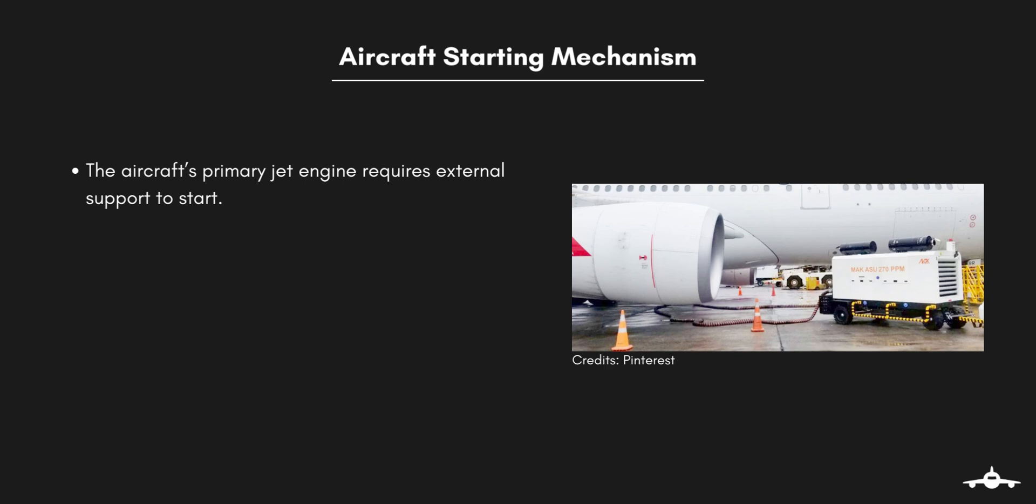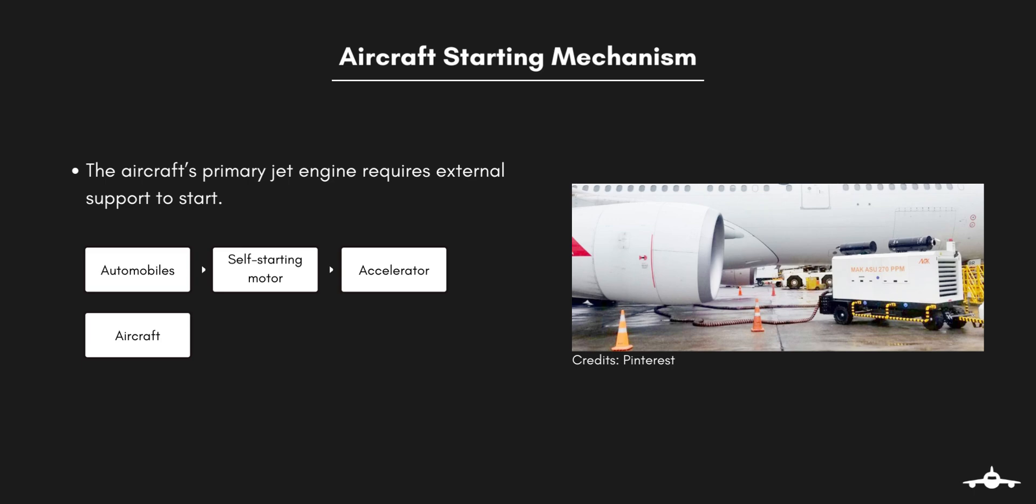The aircraft's primary jet engine requires external support to start just like an automobile engine is fitted with a self-starter motor to start the engine after which it is controlled with an accelerator. ASU does the same function in aircraft jet engines. It starts the primary jet engine after which the pilot takes control through the throttle and the ASU is disconnected.